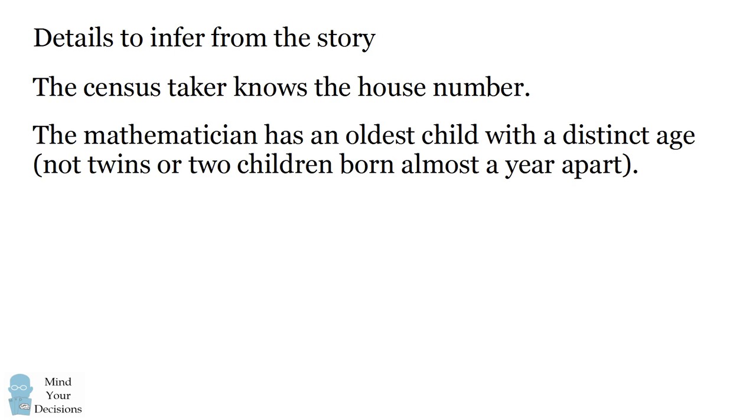Like any good puzzle, you have to deduce some details from the story. First, you have to deduce that the census taker knows the house number of the mathematician. This is a census taker who should know the address, and he's visiting the mathematician at his home.